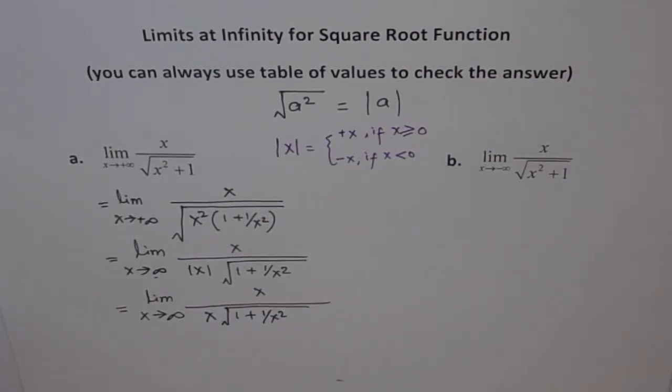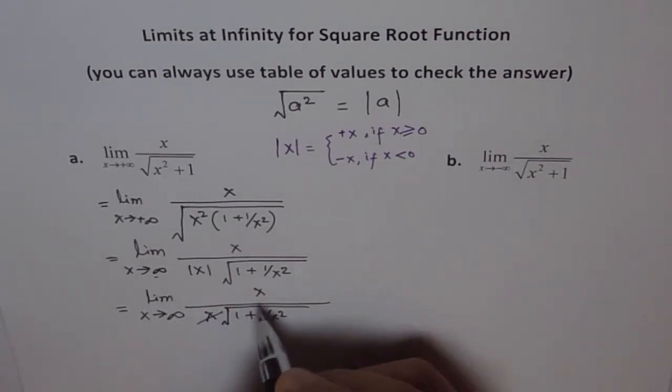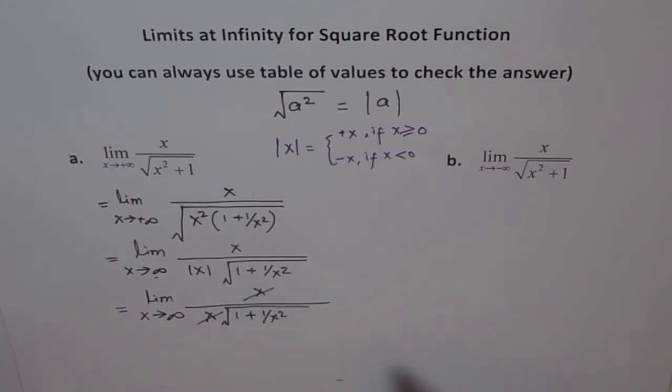Now as you can see we are in a position to cancel out our x's because these are common, they can be cancelled out. We are left with 1 over this. Now final when we plug in infinity here for x, so what do we get? We get 1 over 1 square because 1 over x square is 0.